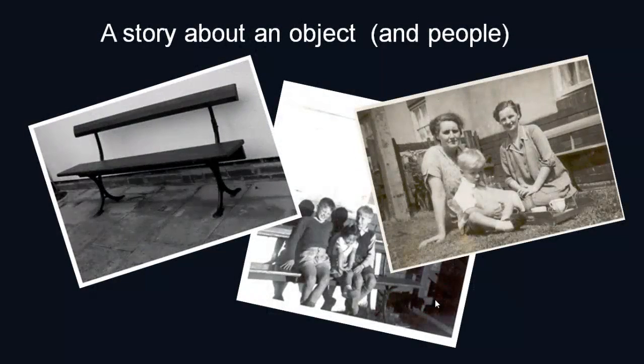Now, many people have photographs like this in their family collection, and this is a good example of how the story isn't always immediately obvious. Although this story is about the people in the pictures, more importantly, the one object that travels all the way through these images is the bench — so this is the story about that bench.